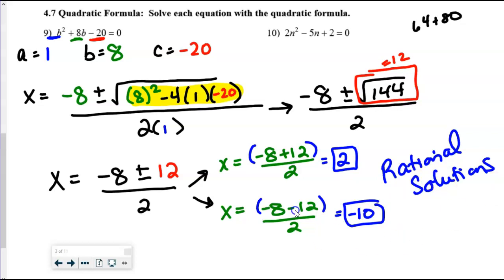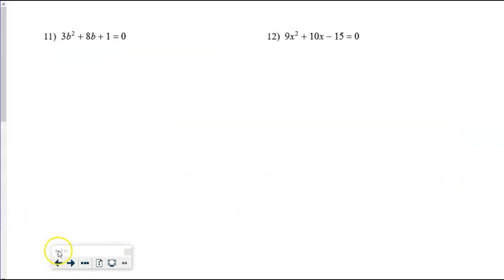So moving along to the next quadratic formula question. There we go. Number 11 is a good one for us to look at. And we have quadratic formula again, which will be given to you. And then our coefficients is what we should identify first. So the a value here is a 3, the quadratic coefficient. And then the linear coefficient is 8. And then your constant is a 1.